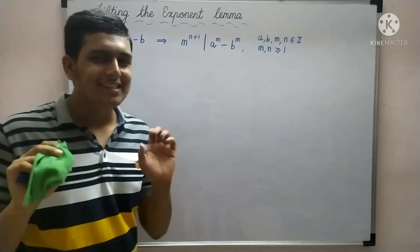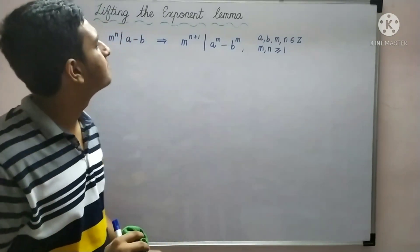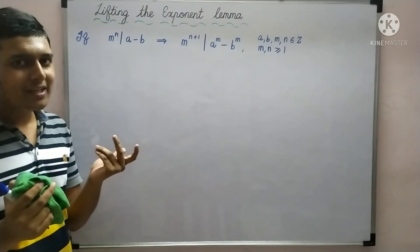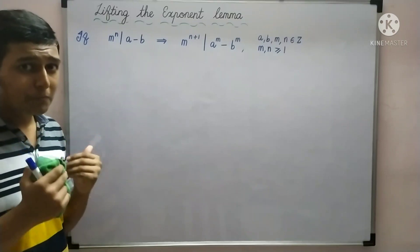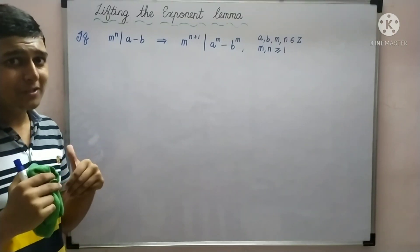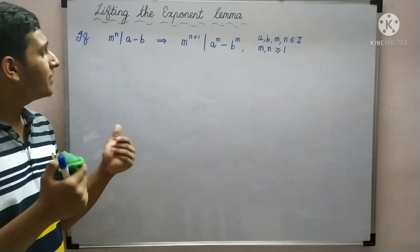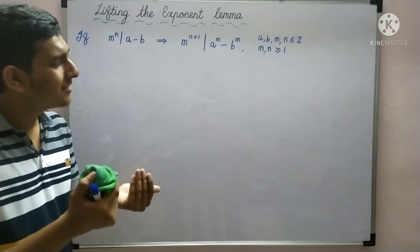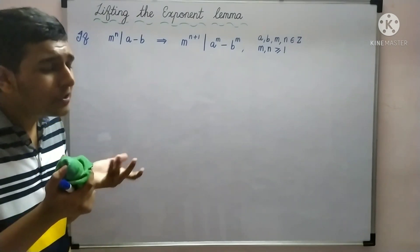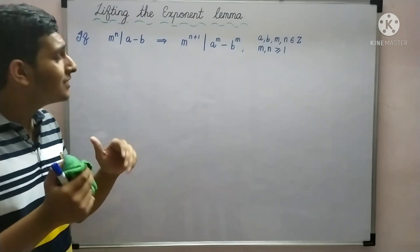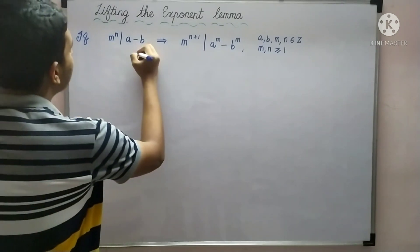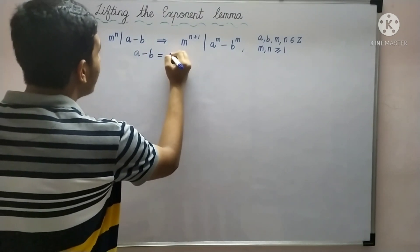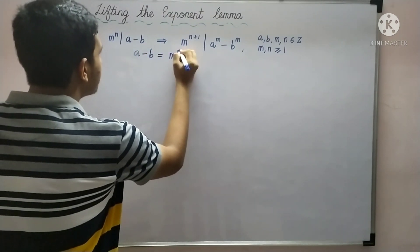Now, let's start proving this. Because a minus b is a multiple of m raised to n, it is some integer times m raised to n. Let that integer be q, giving us the equation: a minus b is equal to m raised to n times q.